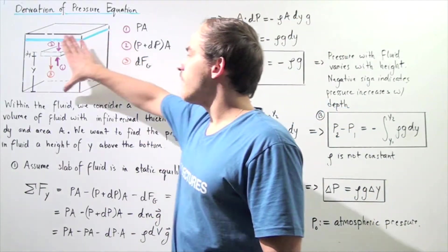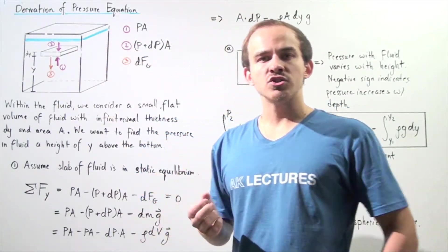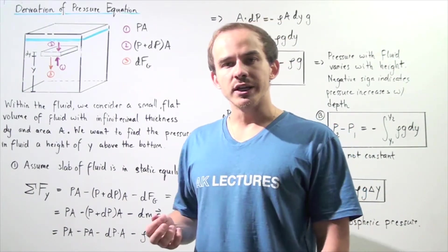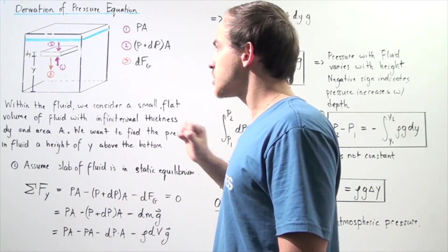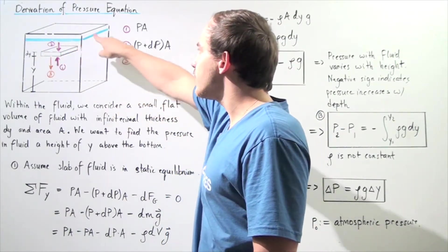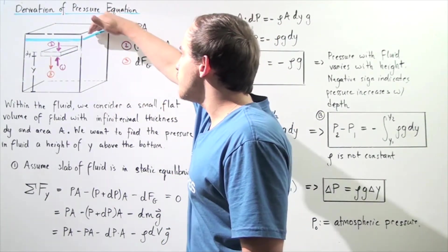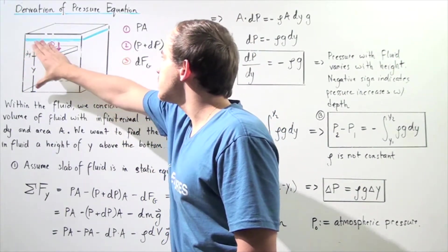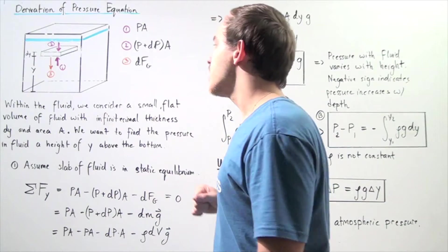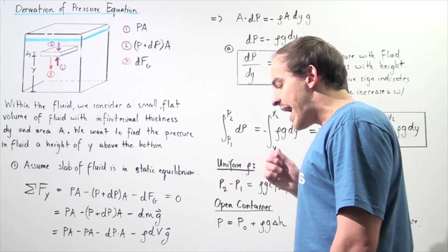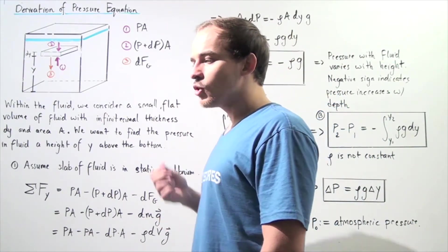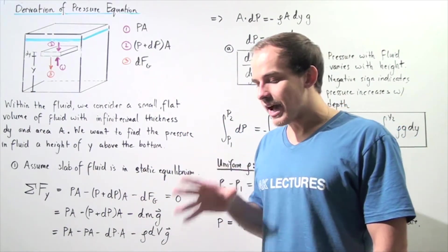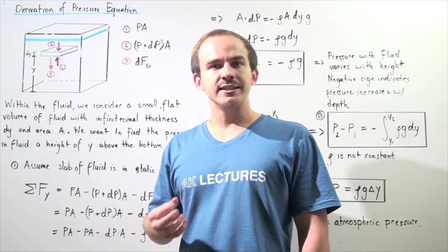Let's begin with the following diagram. Suppose we have a certain container filled with a fluid. The surface of that fluid is given by this blue line, and everything below that blue line contains our fluid — so this entire volume contains the fluid. How exactly are we going to derive the pressure equation for pressure inside a fluid when the density is not constant?